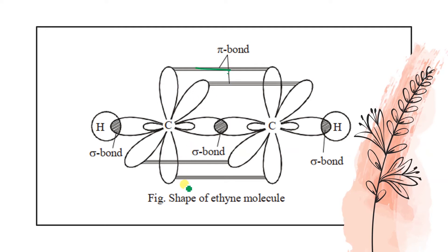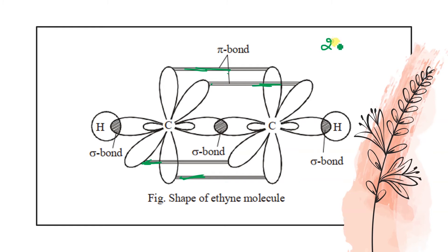The two pi bonds are formed by pz-pz overlap and py-py overlap — so there are two pi bonds and one sigma bond in a triple bond.